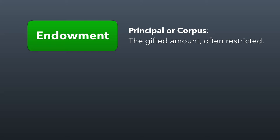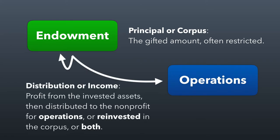Only the growth of the endowment is available for operations or other activities, but never the corpus itself — meaning the original gift. Other restrictions can include how the investment growth is used, meaning the donor could restrict the endowment proceeds to be used for specific activities. What happens over time is hopefully the invested assets grow, creating what's called a distribution or income from the endowment, where profit is distributed to the nonprofit or reinvested into the corpus, or both.